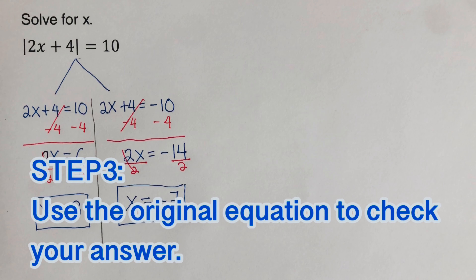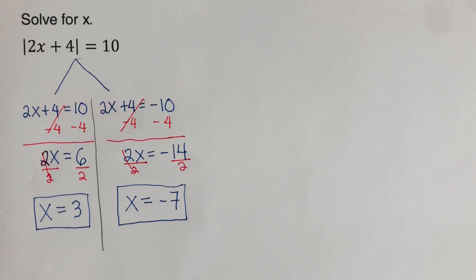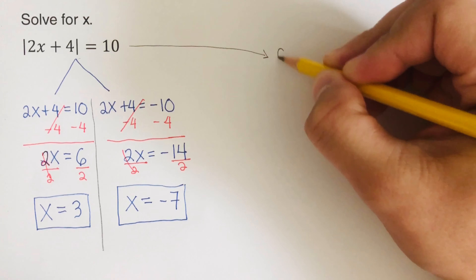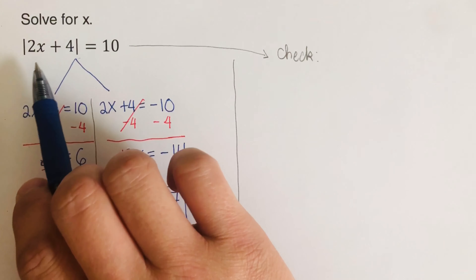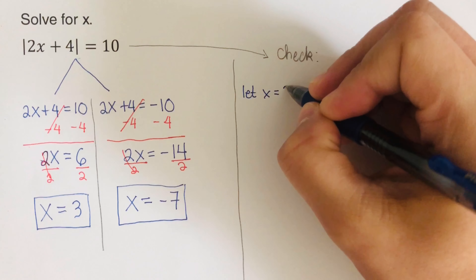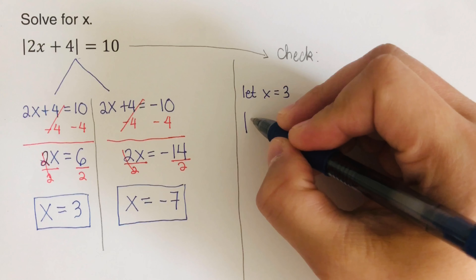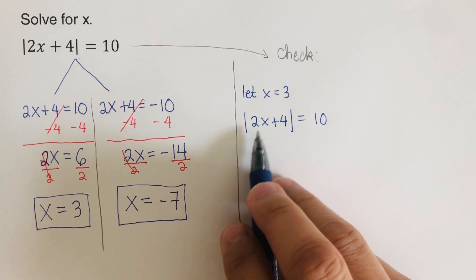Step three is to use the original equation to check your answers. It's very important to check because sometimes it looks like it worked but it doesn't when you check. We always check our work using the original equation. To check x = 3, we rewrite the original equation: |2x + 4| = 10, and plug in x = 3.